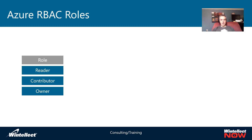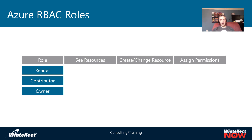When we talk about Azure, there are three broad roles: a reader role, a contributor role, and an owner role. These three roles can be applied at the subscription layer, at the resource group, or at a specific resource itself. They have three broad sets of permissions: the ability to see resources, create and change resources, and the ability to assign permissions to those resources.